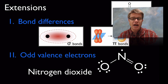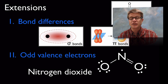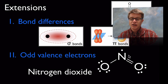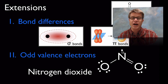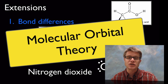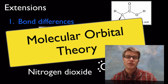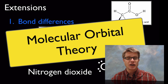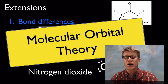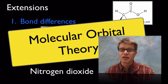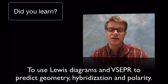Sometimes the math doesn't add up — we'll have an odd number of electrons. Nitrogen dioxide has a Lewis structure with one single unpaired electron; we call that a free radical. For these extensions we can build a better model called molecular orbital theory, based on quantum theory and mathematics. It's just a different model that can answer a lot of these questions, but it's probably too sophisticated for AP Chemistry.